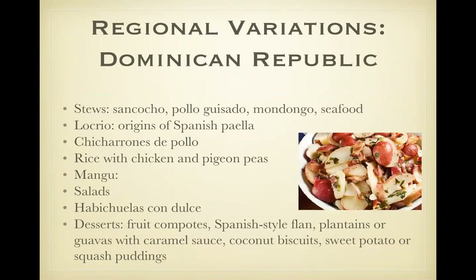Dominican Republic regional variations. Sancocho — somebody might ask you what sancocho is — this is a stew that may have many kinds of meats and numerous starchy veggies, all cooked in an orange juice base. Locurillo is similar to a Spanish paella. Chicharrones is fried pork. Mango is mashed plantains topped with olive oil and fried onions. Salads often have cooked vegetables such as cooked potatoes, squash, cabbage, etc. Habichuelas con dulce is red beans with coconut milk, evaporated milk, whole milk, sugar, and butter — a sweet bean dish.